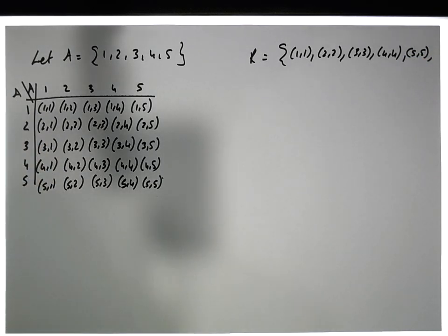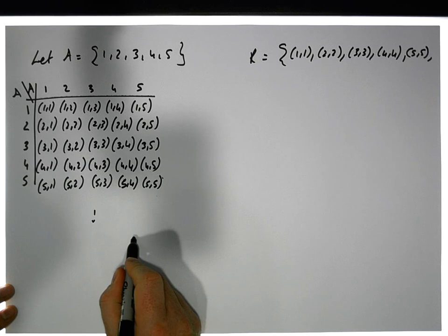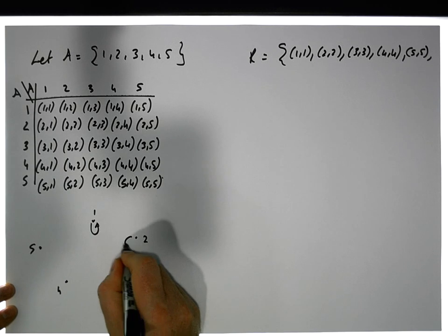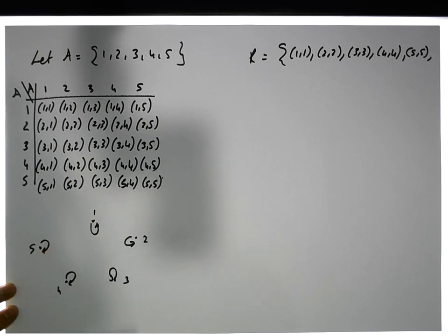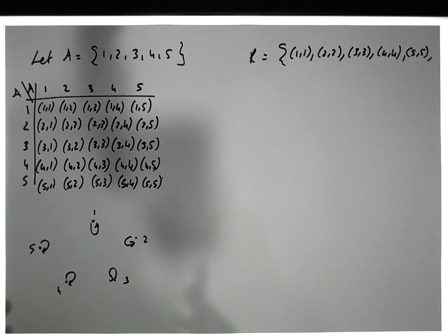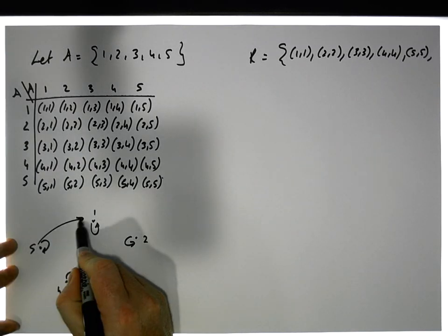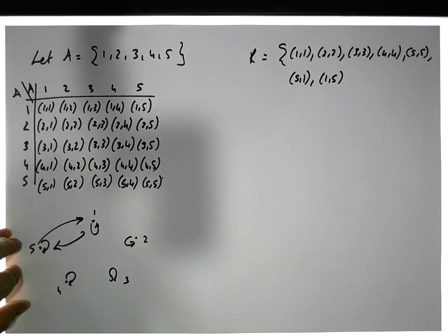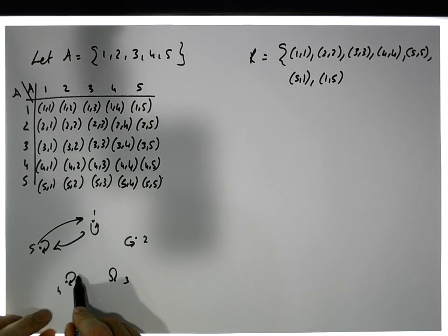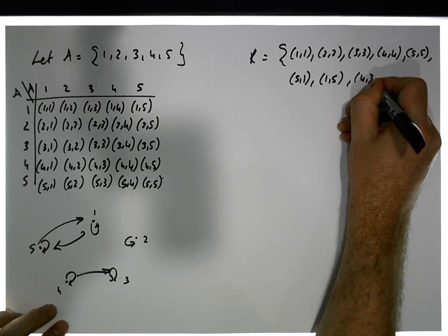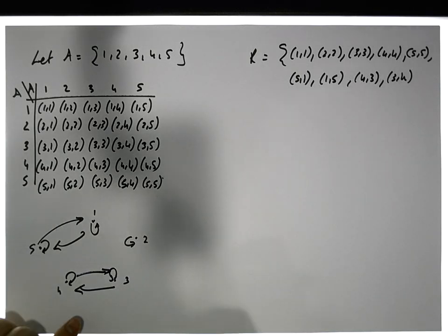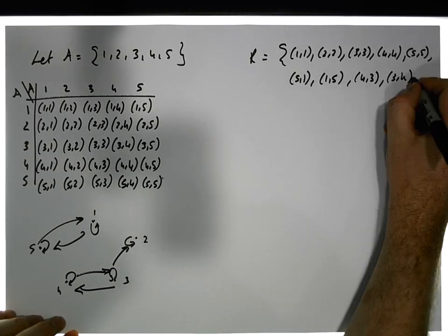I also want it to be symmetric, so let's draw the digraph. We have nodes one, two, three, four, five, each with a self-loop because it's reflexive. Now let's make it concretely symmetric: let's put in an edge from five to one, and because it's symmetric there needs to be an edge back from one to five. Let's also add an edge from four to three, so we need an edge back from three to four.